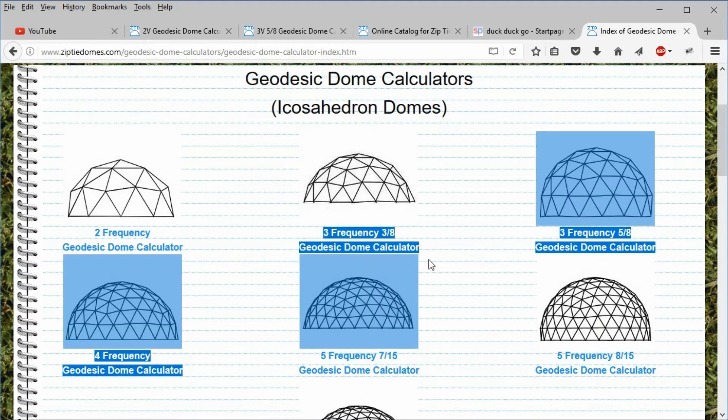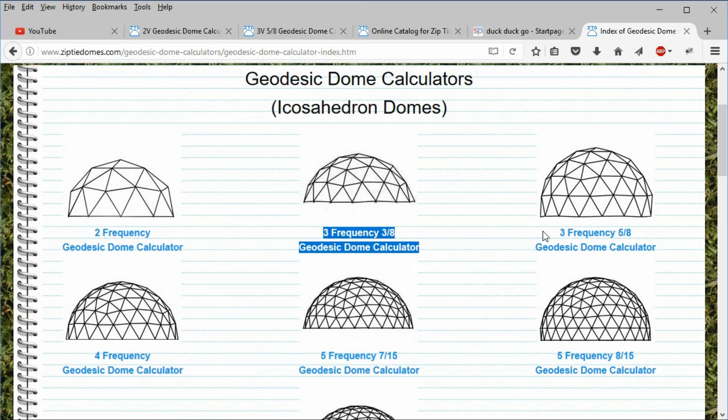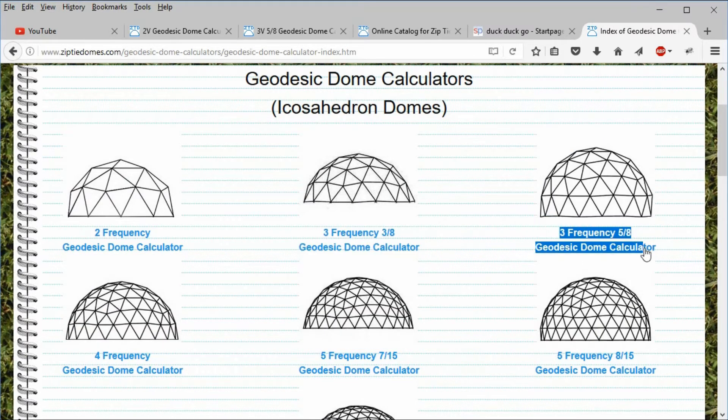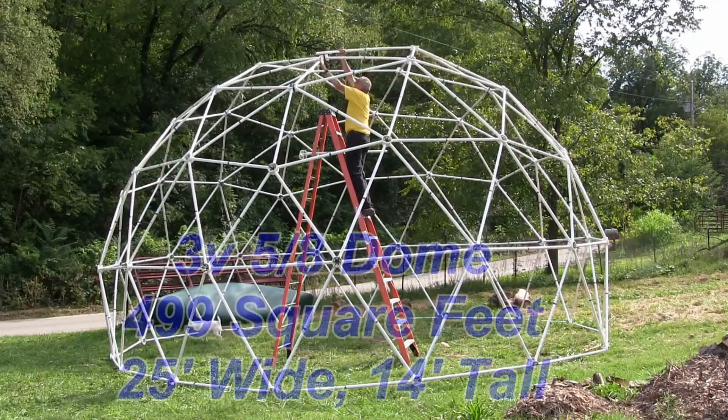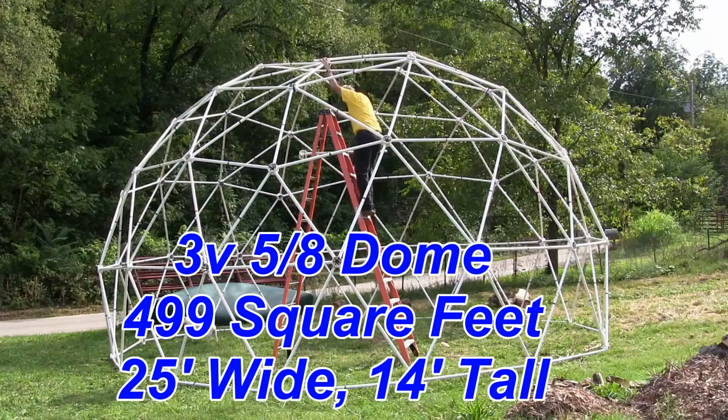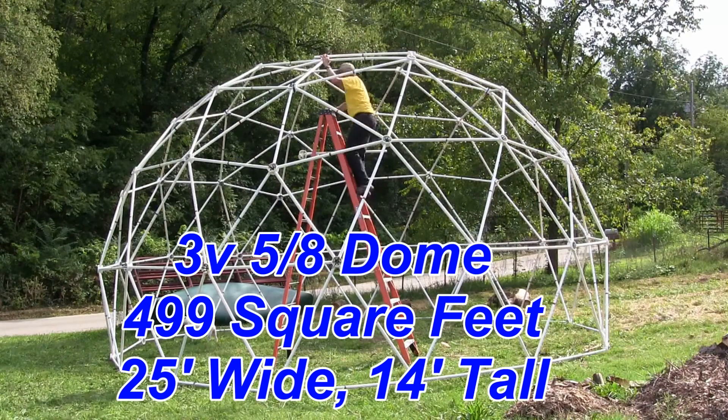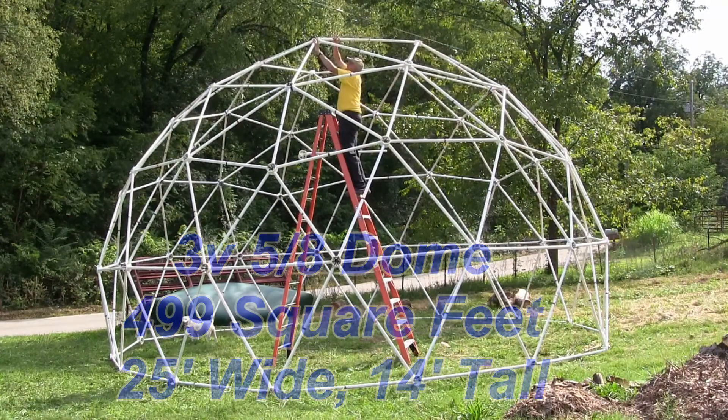Notice that we have a 3 frequency 3 eighths dome and a 3 frequency 5 eighths dome. Let's explain the difference between the 3 eighths and the 5 eighths dome. Here is an example of a 25 foot 3 frequency 5 eighths dome. This dome will be over 14 feet tall.